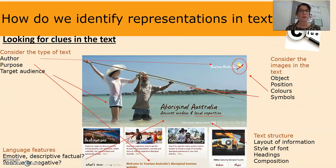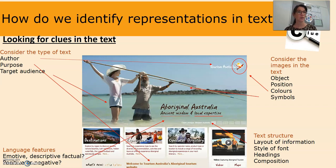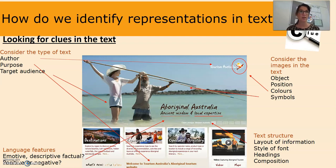The next thing we need to do when identifying representations is look for clues in the text. I've found an advertisement — actually the home page of Tourism Australia's website for Aboriginal Australian tourism — and I've identified a number of clues to help us determine whether it is a positive or negative representation of Indigenous people. When looking at a text like this, we need to consider the text type. Well, it is a website — a welcome page to Australia's Aboriginal tourism website.